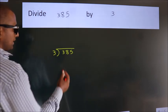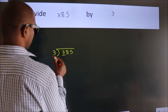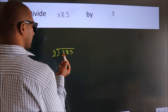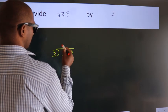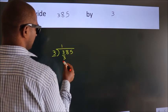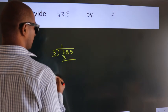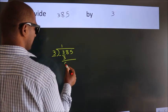Next, here we have 3, here 3. When do we get 3? In 3 table, 3 wants 3. Now, we should subtract. We get 0.